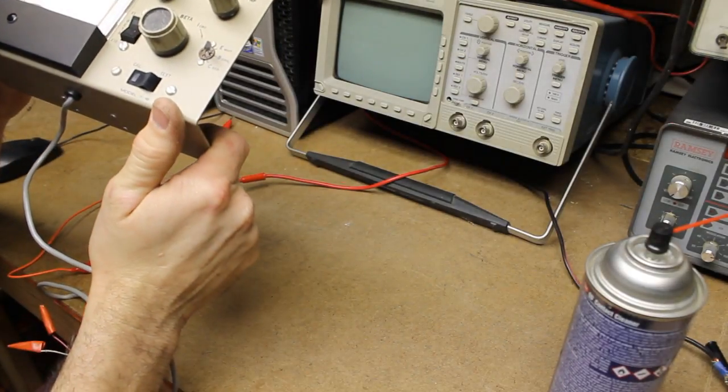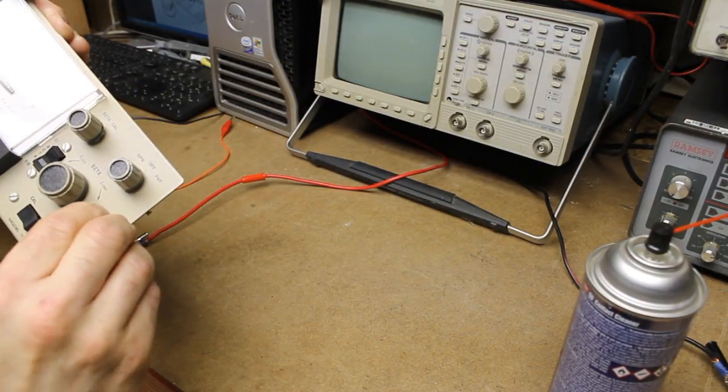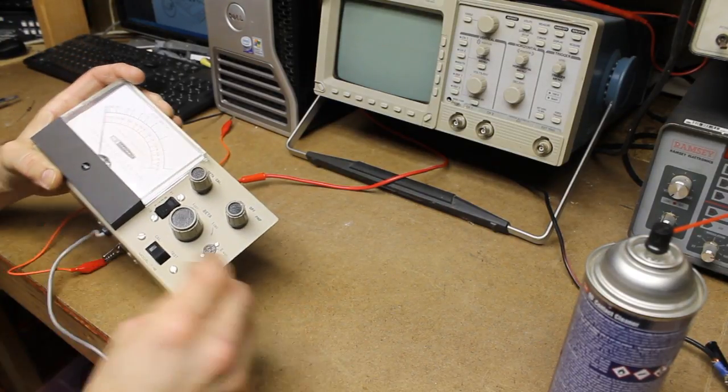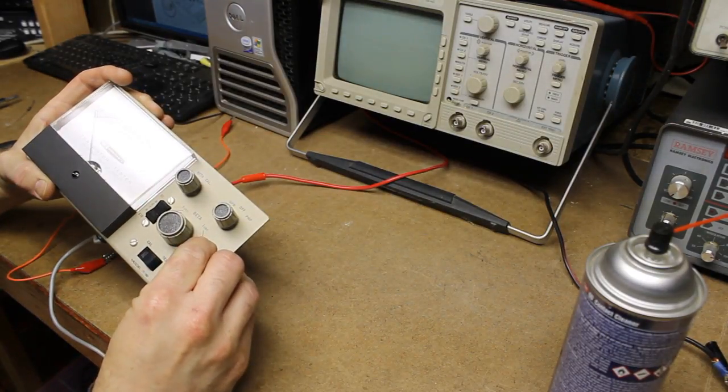Beta calibration switch looks like it's in fair shape. What transistor is plugged in here? We'll have to pull it out and take a look. 2N3906. Pretty standard transistor there.